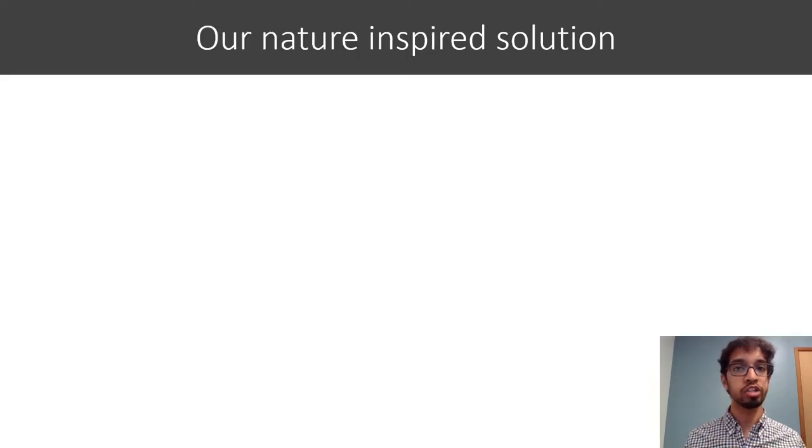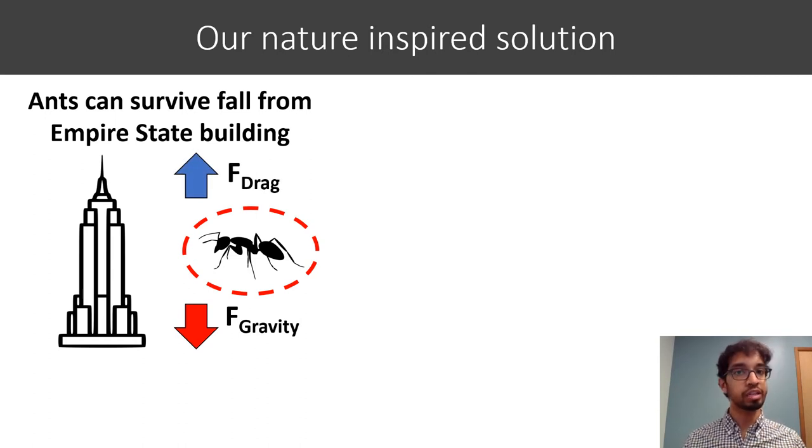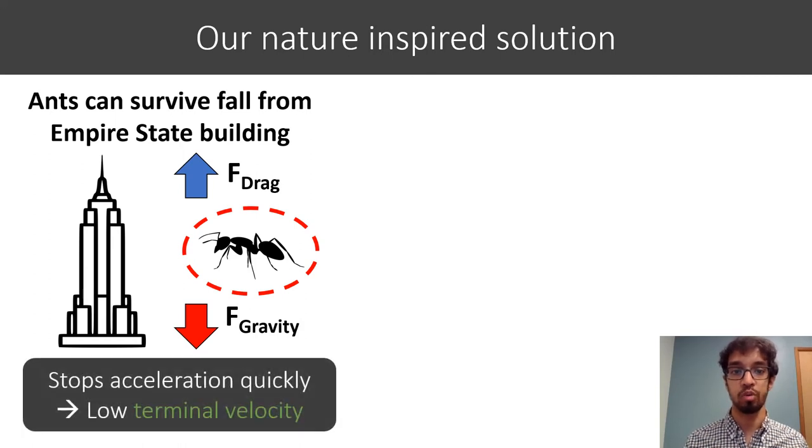In this work we look to nature and we notice that another way to survive impact is by making the thing you're dropping really small. For example, an ant can actually survive a fall from the top of the Empire State Building. And this is because these things are just so small and lightweight that the gravitational force on them quickly counteracts, or the air drag quickly counteracts that force and it makes them stop accelerating and reach a low terminal velocity.